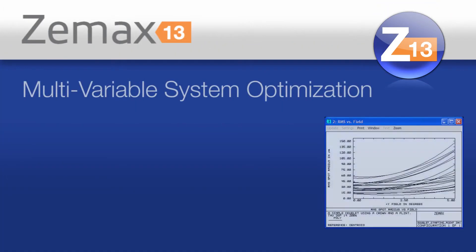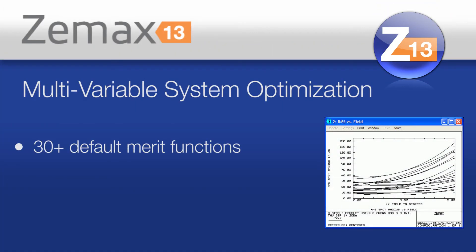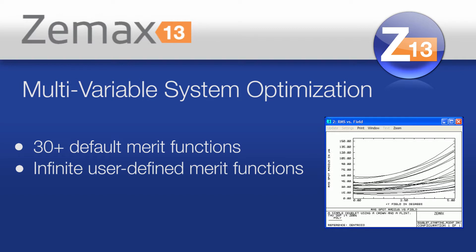It comes with 30 pre-built default merit functions that address many of the needs of optical designers, but we expect and we encourage our users to modify these away from their default settings so that you can create something that is exactly right for your system.